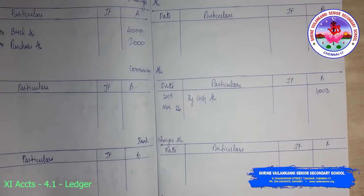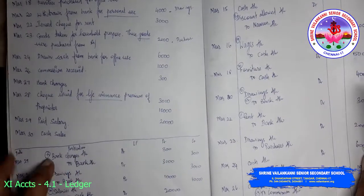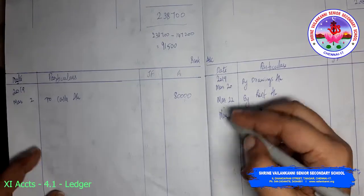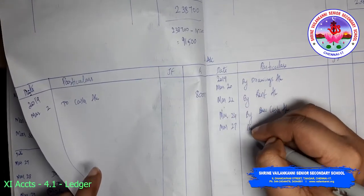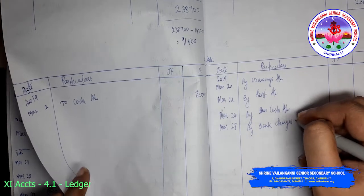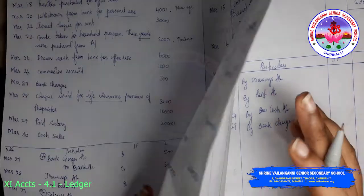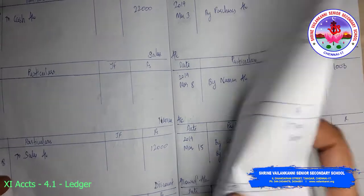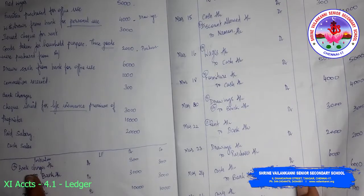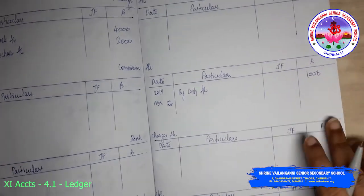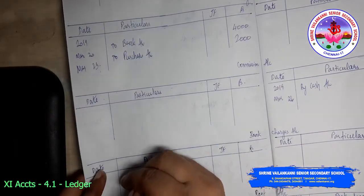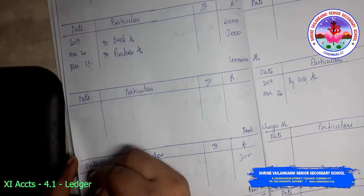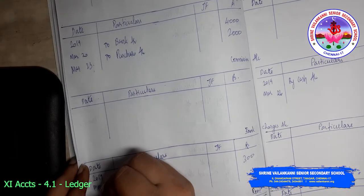I hope that this is clear. Then bank charges account to bank account — so bank account, first we will finish: by bank charges, March 27th, by bank charges 300. Then bank charges account — so bank charges, 'to bank' — I will just write 'to bank' here, 300. 2019, March 27th.